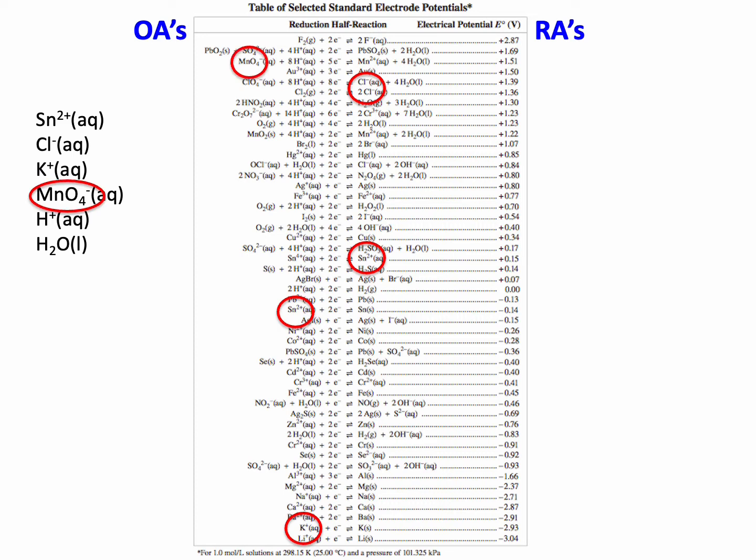K⁺ is down there, MnO₄⁻ is there, H⁺ is all over the place but let's just use the one that's by itself because the ones that have others aren't at our dance. And water is there and there. There's all of the kids at our dance.